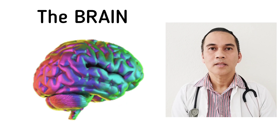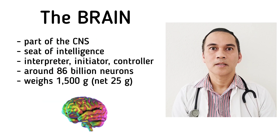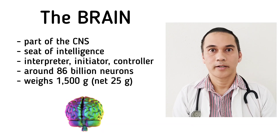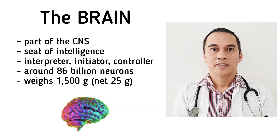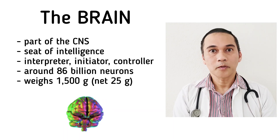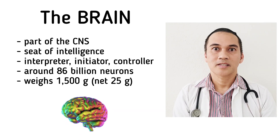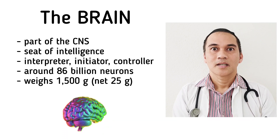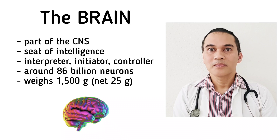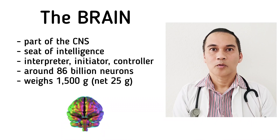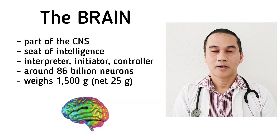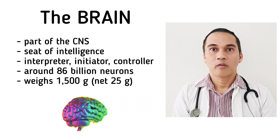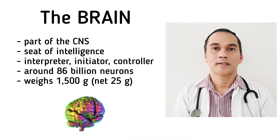The brain is part of the central nervous system and it is one of the components, the other being the spinal cord. It is a seat of intelligence. It is an interpreter — it interprets senses. It is also an initiator — it initiates actions or movements, and it also controls behavior. These processes are carried out by over 86 billion neurons found in our brain.